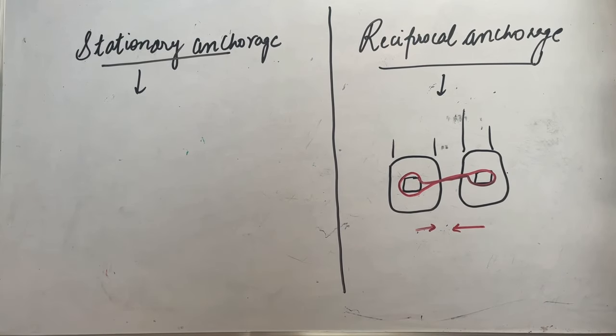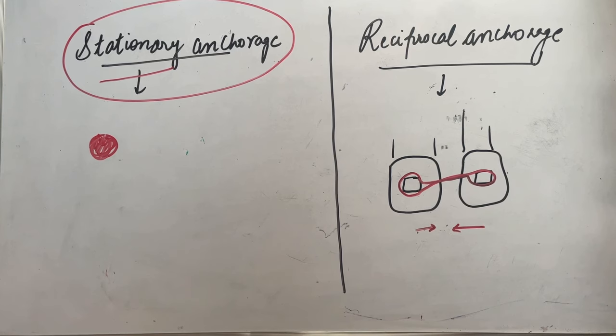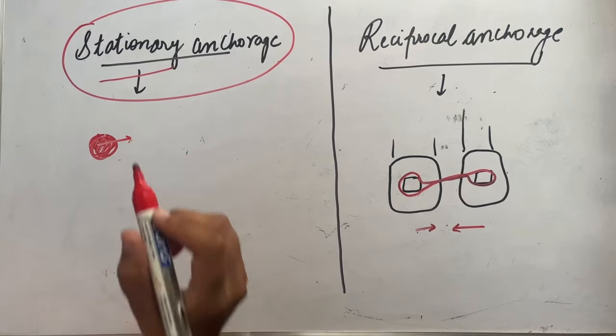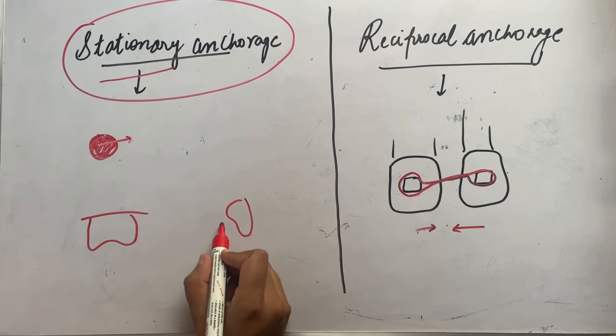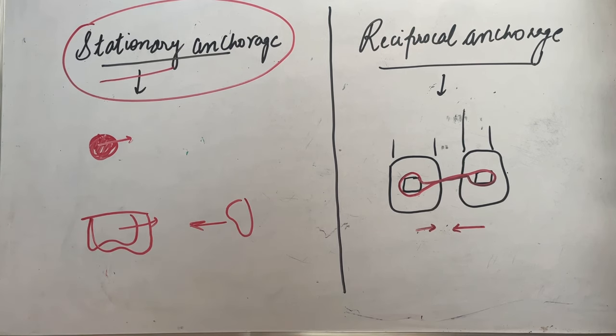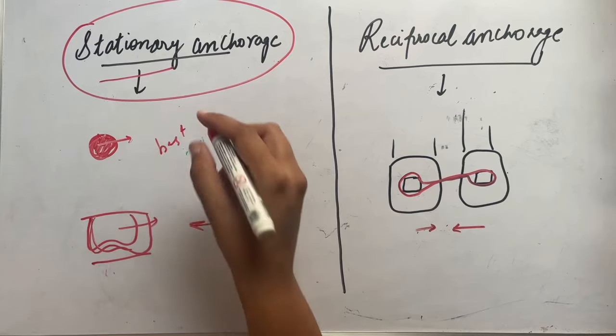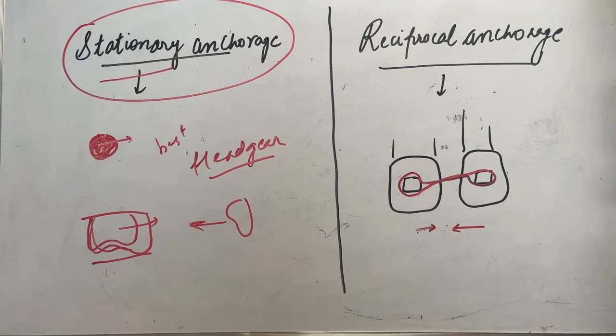Next we'll talk about the differences between stationary and reciprocal anchorage. Stationary anchorage: any object which does not move is our stationary object. So according to that, stationary anchorage will be anything that does not move on force application. We can see that when we retract our anteriors, as we are retracting our anteriors, a counter force is applied on the posterior teeth causing movement of molar. Now we know that the molar has moved, so this cannot be considered a stationary anchorage. The best example for stationary anchorage will be our headgear, which is our extraoral anchorage.